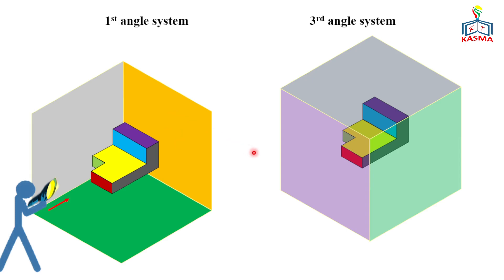For the third angle projection, we trace the features of the object like a transparent glass box system. The projection plane is assumed to be transparent, showing the detailed information of the object inside the box. We can use a camera to take photos of the object. So for first angle projection we use a light system, and for third angle projection we use a camera system.